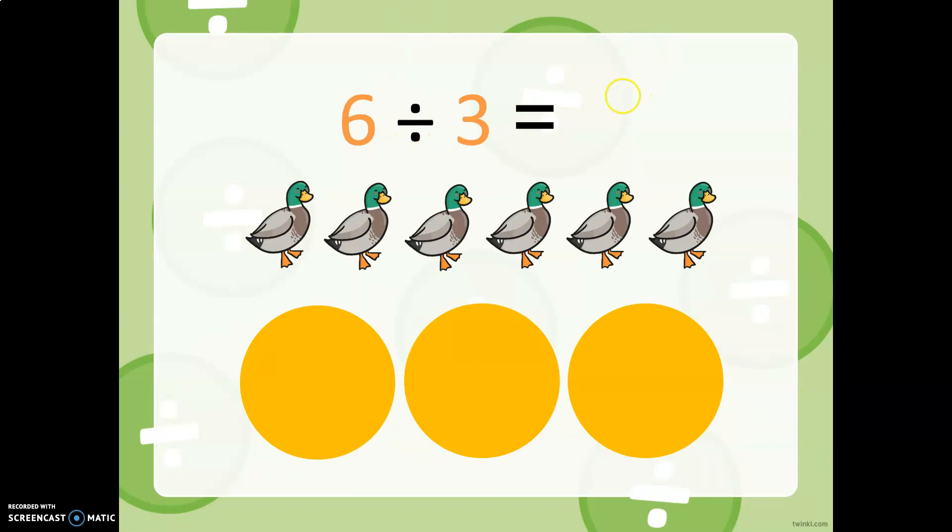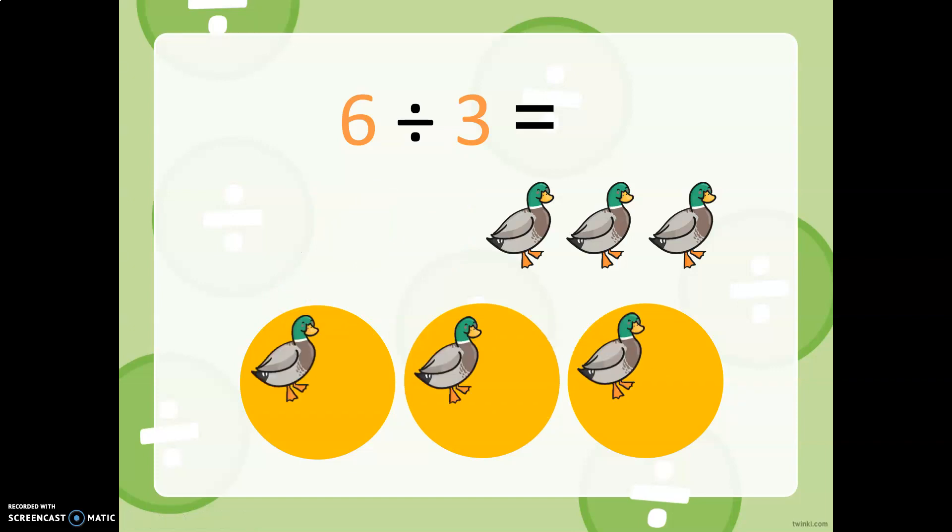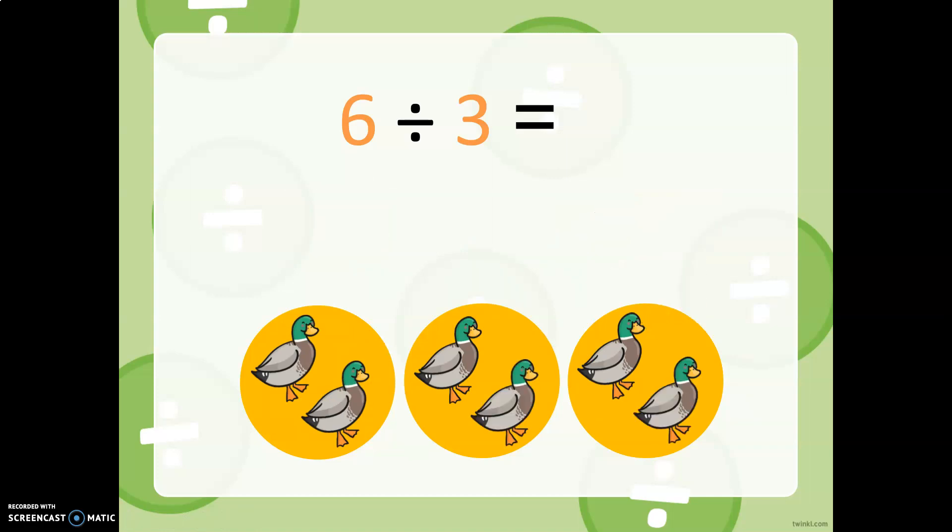Six ducks and three ponds. Let's say these are ponds, like a place for them to swim. So there's three different places for them to swim. One duck can go there and there, and then another duck can join them. So we have six ducks swimming in three different ponds, and there are two ducks in each pond.